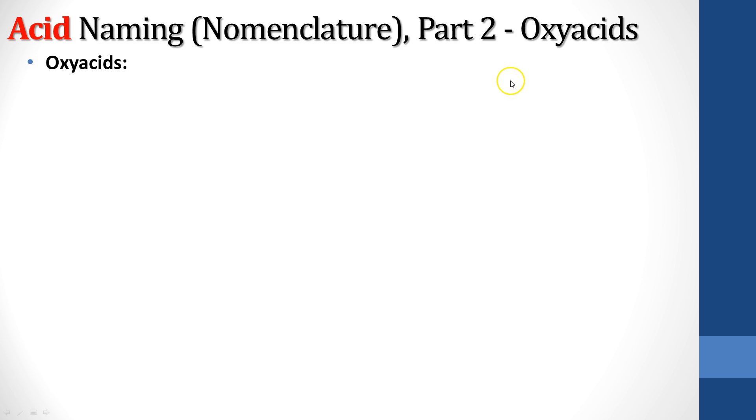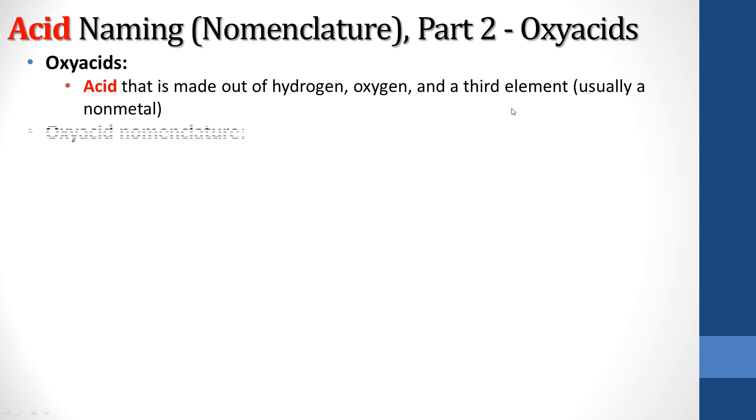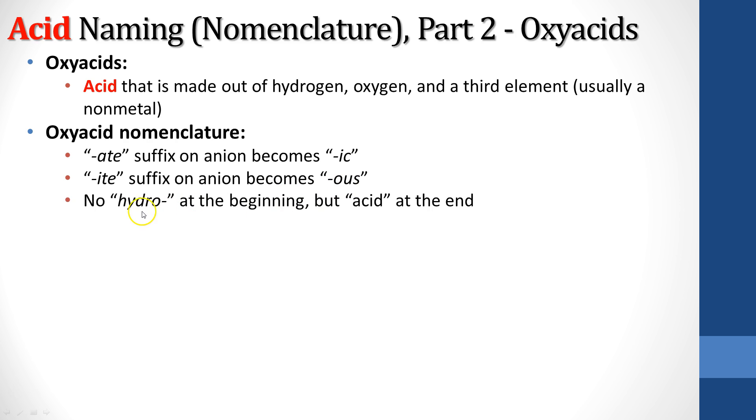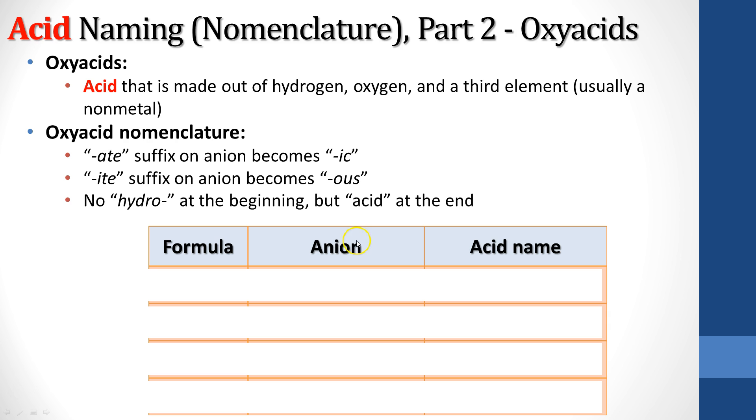The other one, oxyacids, like sulfuric acid, those are going to have an acid that is made out of hydrogen, oxygen, and a third element, usually a non-metal of some kind. The nomenclature for this: -ate becomes -ic. So if that ion was -ate before, now it's going to become -ic. If it's -ite, that's going to become -ous. And you do not put hydro at the beginning, but you do add acid at the end. So let's take a look at some examples.